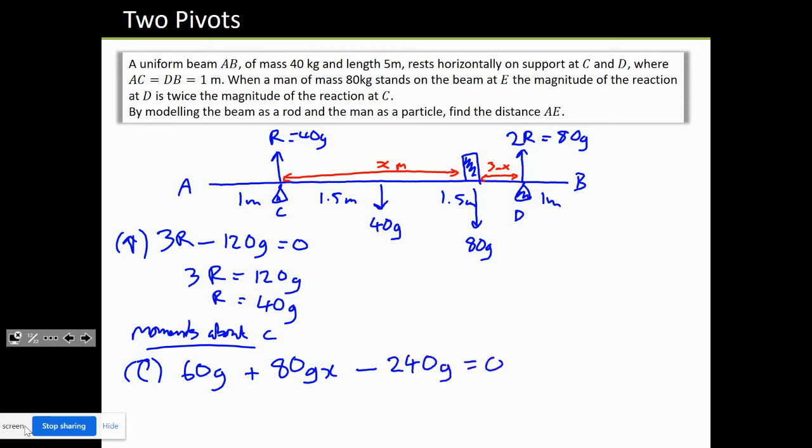That equals 0 because we have 0 Nm moments around. At this point, we can gather that 80x, all the g's cancel, is going to equal 240 minus 60, so 180. x equals 180 divided by 80, which is 18 divided by 8, 9 divided by 4, 4.5 divided by 2, that's 2.25 meters.